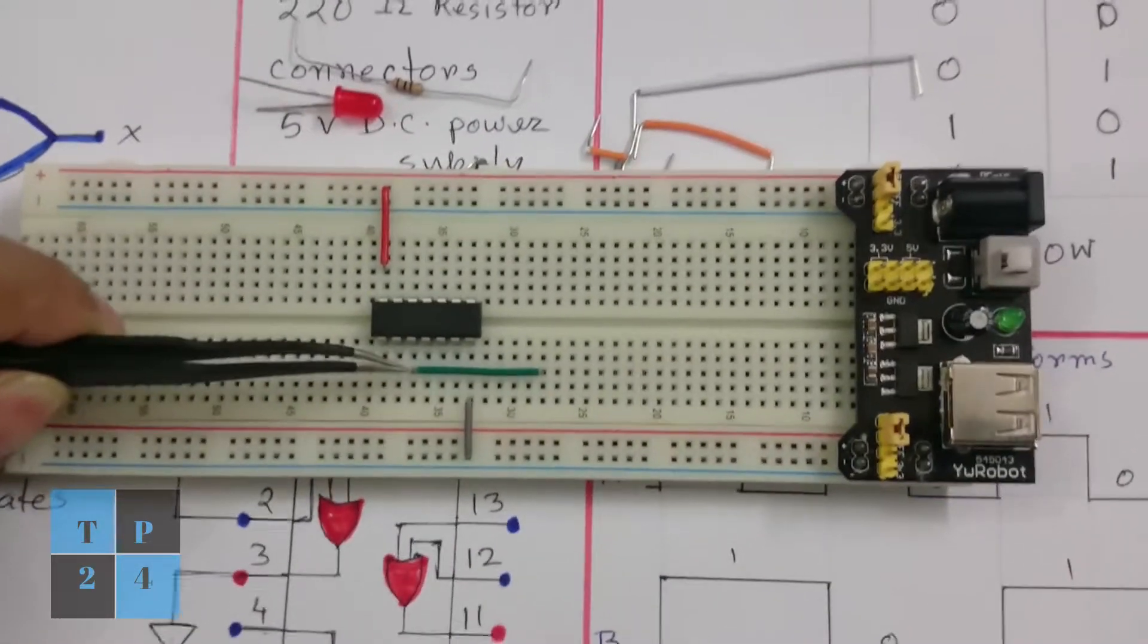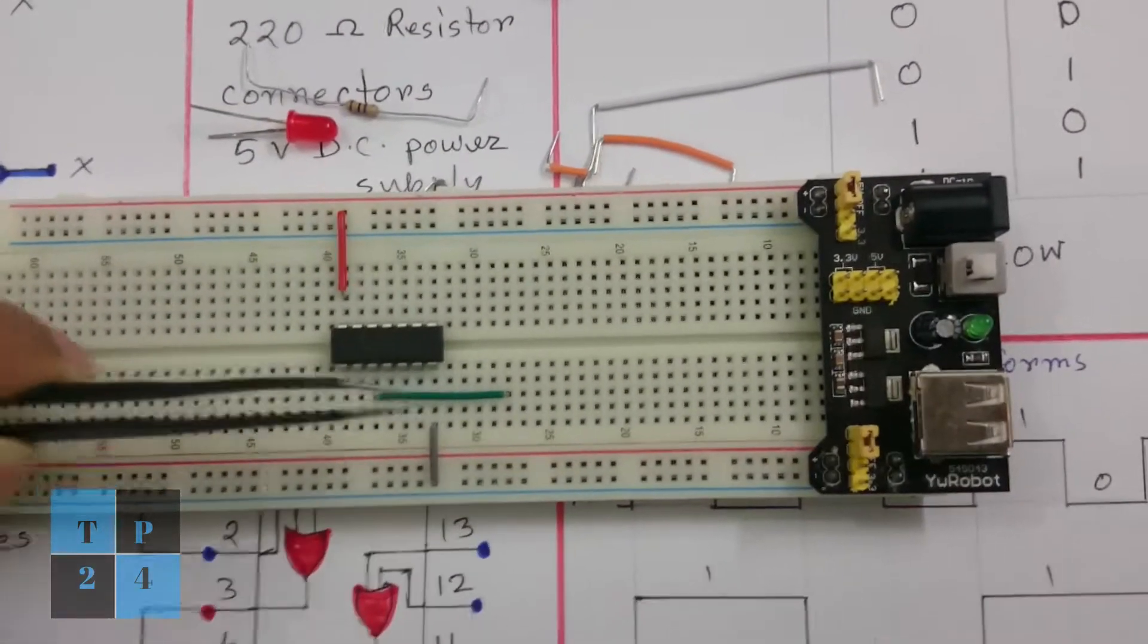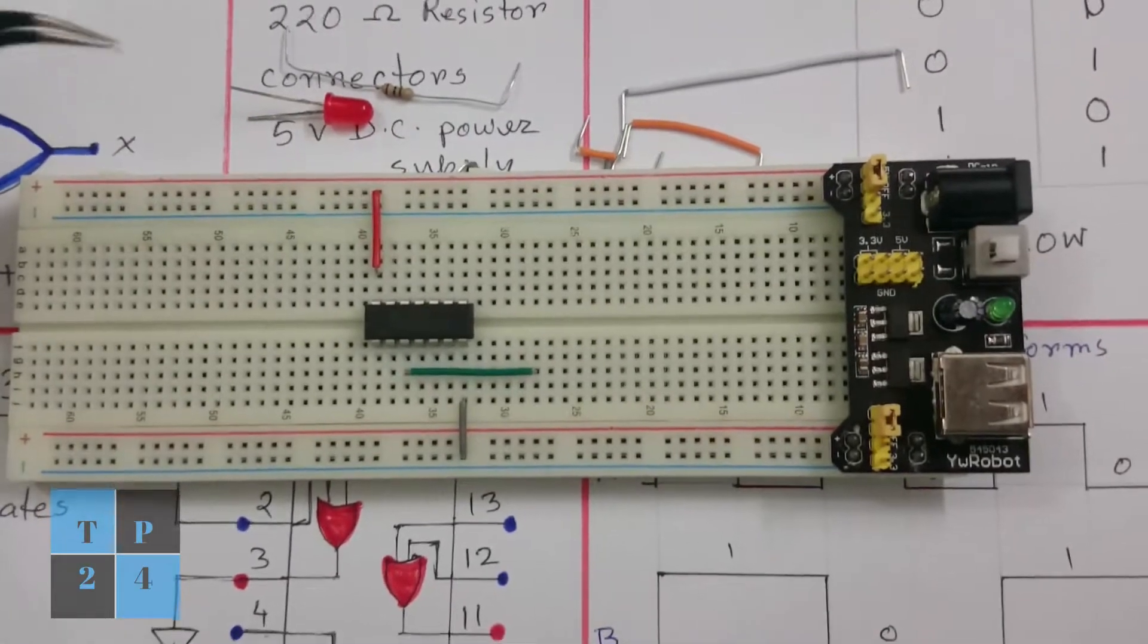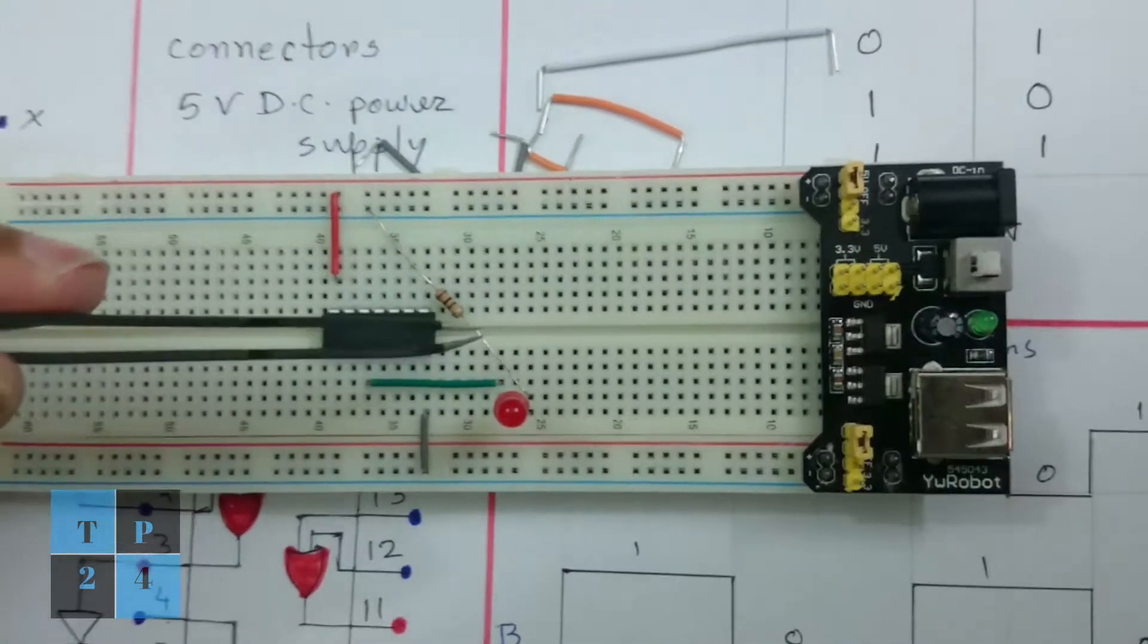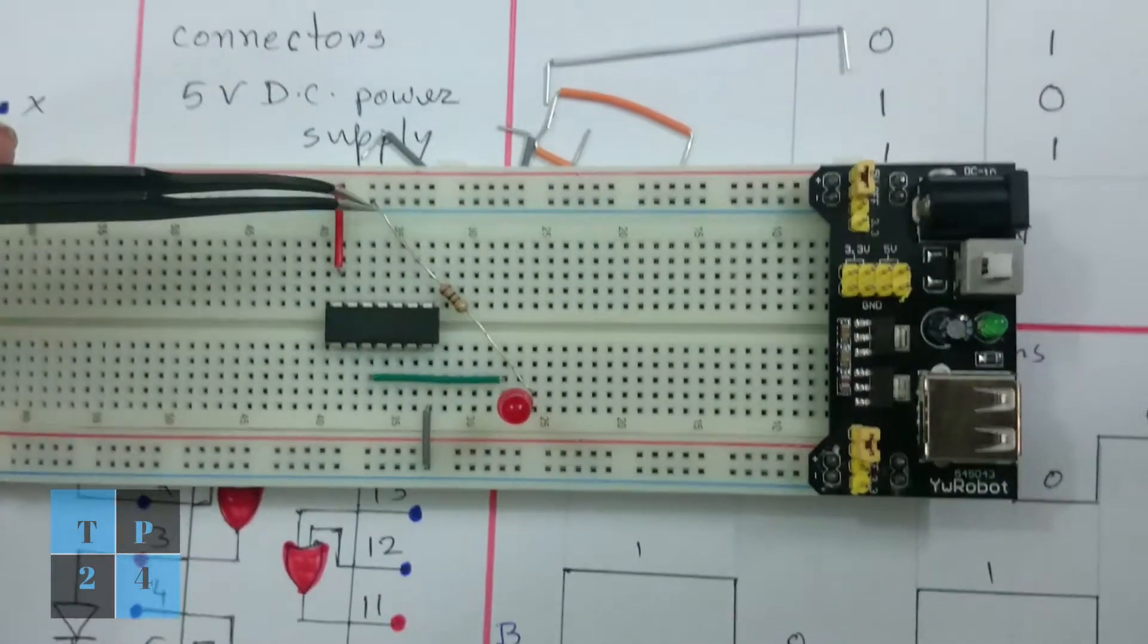And I took the connection from pin number 3 to here and I am going to put the LED with resistor. So here is the LED. I connected it here through a resistance to the ground.